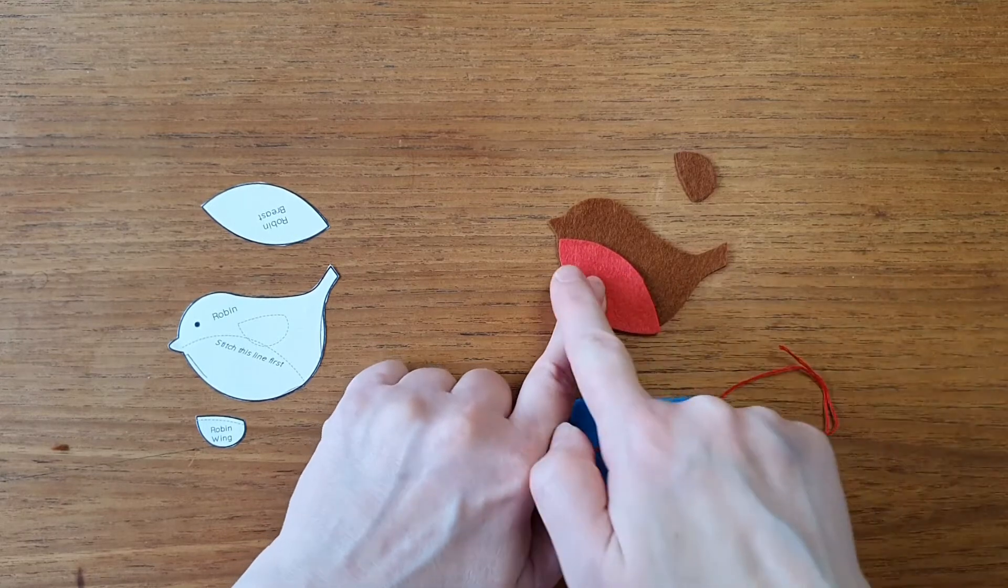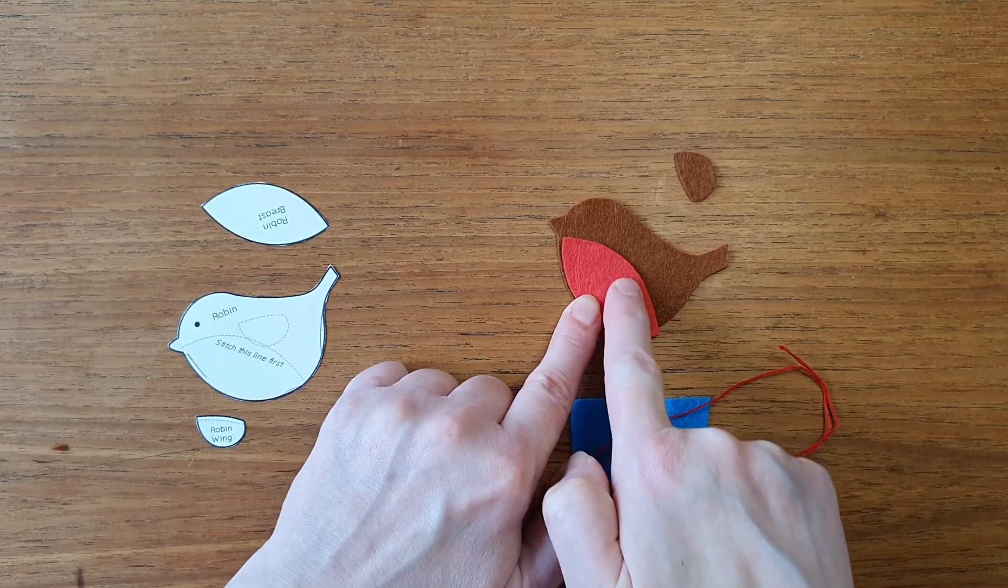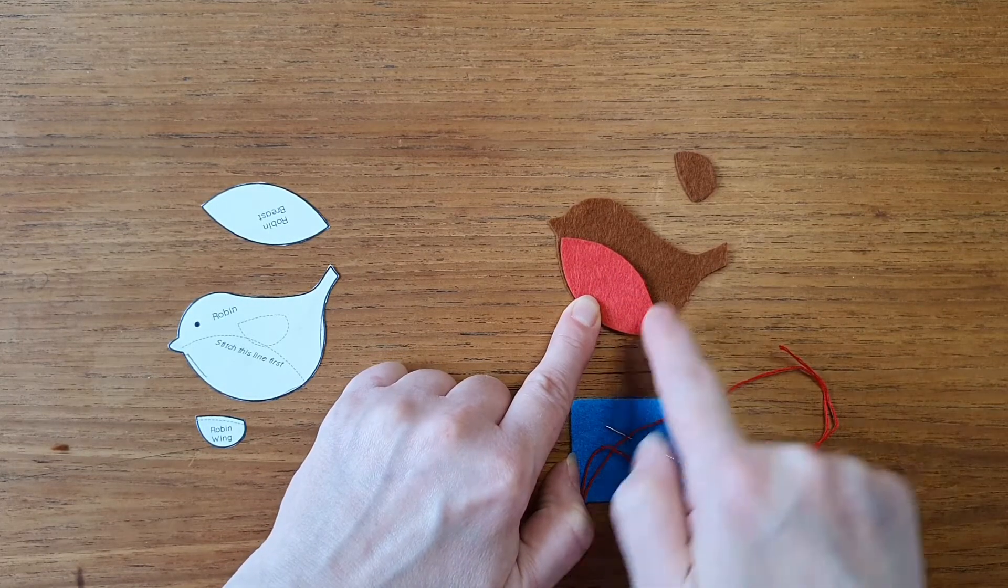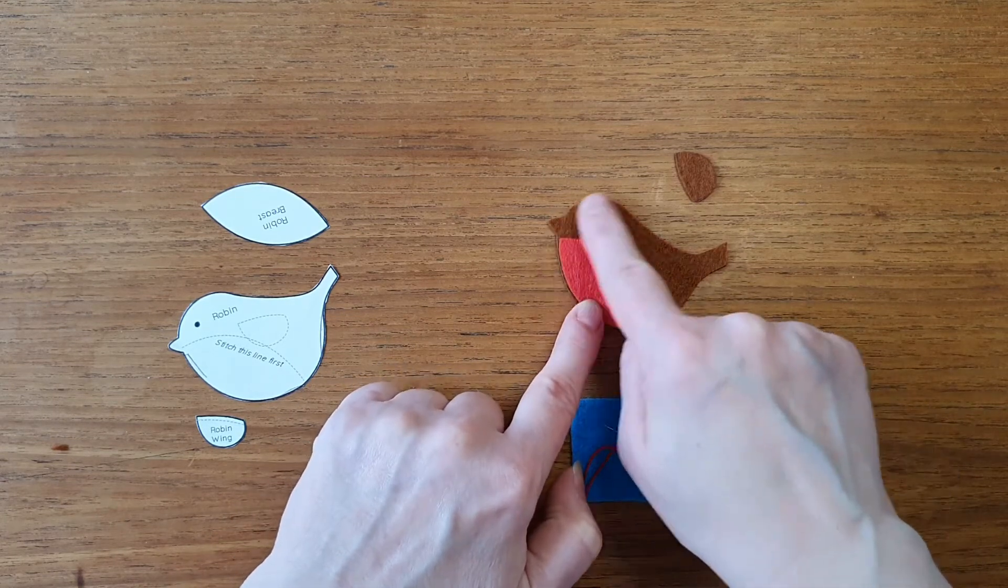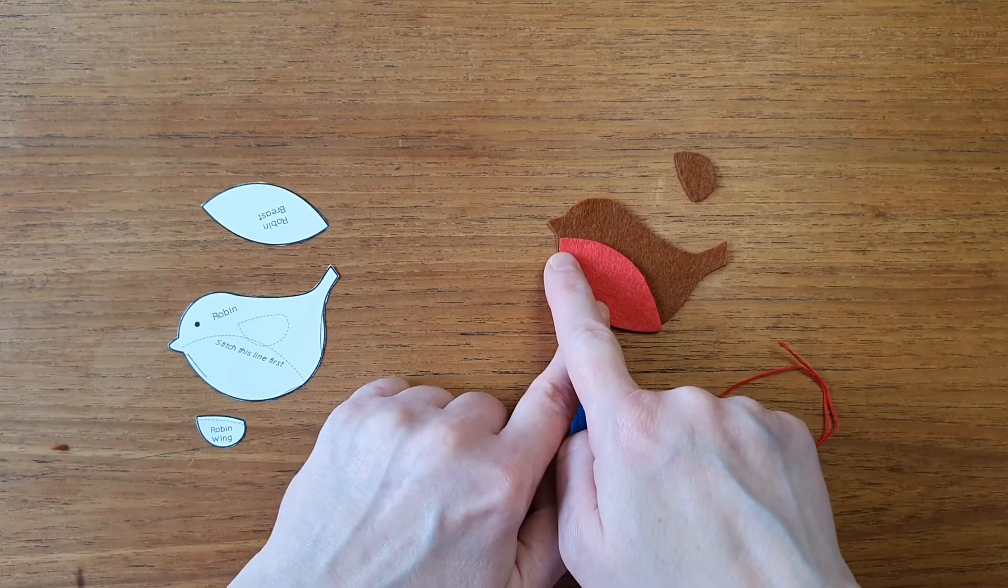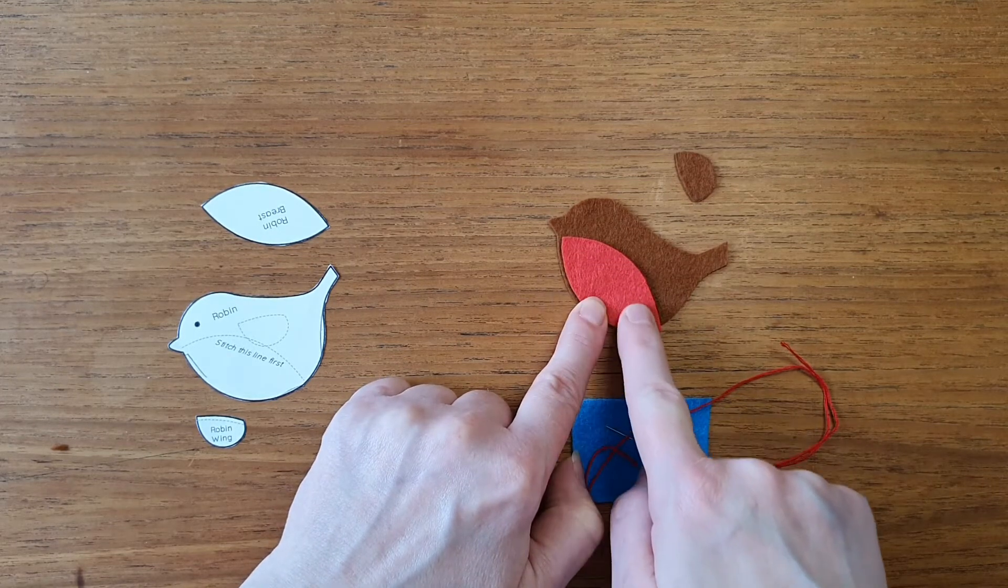Sew the red breast on first, and I'm going to sew just this line here. I don't have to sew the bottom part at the moment because I can stitch that when we stitch all the way around. So the first stitching I do is this line here.